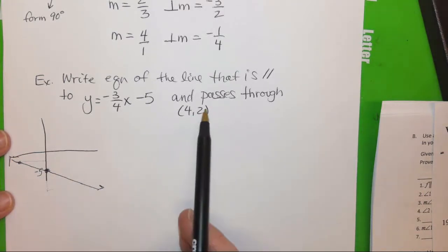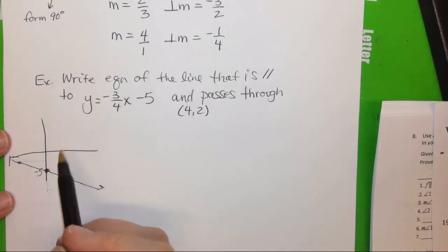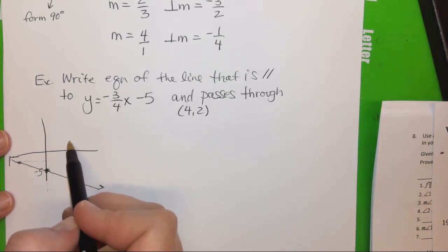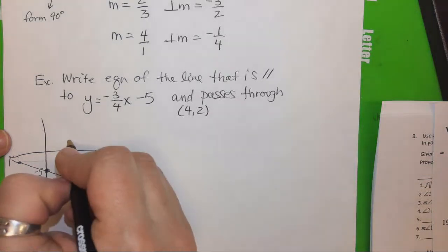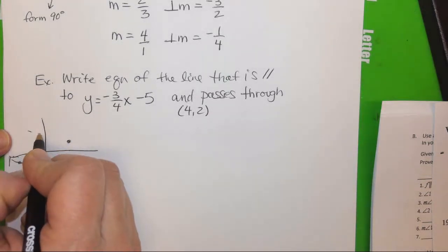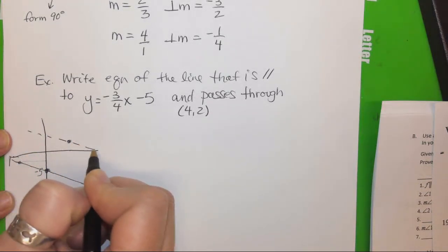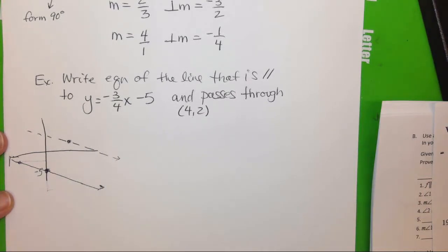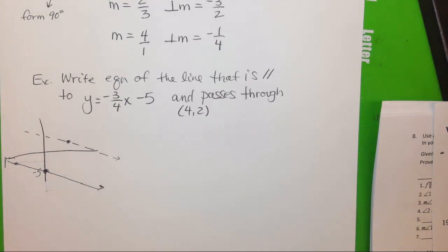Okay, now, they want a parallel line that's going to pass through four-two. Well, four-two is maybe around here. So they want this parallel line that passes through it. That's the equation that we're looking for. So that's really the problem that they're asking you to do.